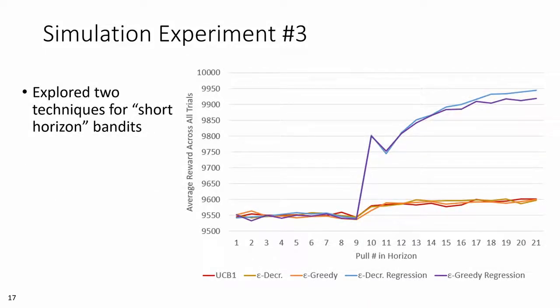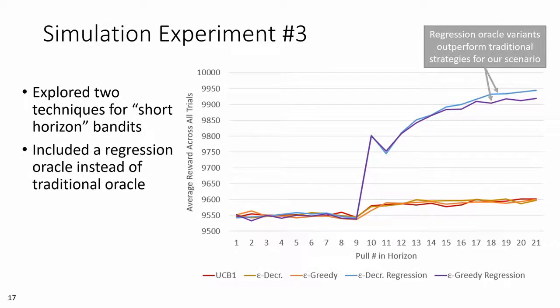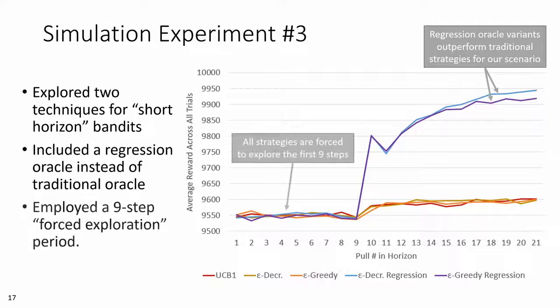investigating two techniques for so-called short horizon bandits, namely the regression oracle mentioned previously, as well as a forced exploration period that establishes a statistical baseline for each arm up front. The results are shown here, revealing that the regression oracle variants were especially effective in the case of our scenario, even outperforming UCB1. We used these simulator experiments to determine our bandit configuration for the user study, an Epsilon Decreasing strategy with a regression oracle and a forced exploration period of nine steps.